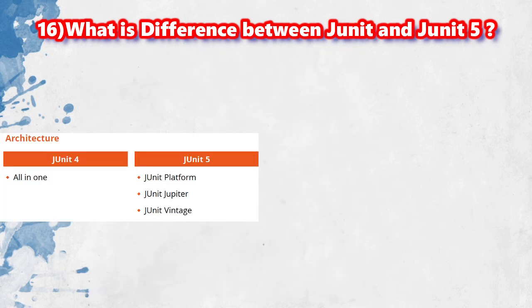In other words, there are many differences between JUnit 5 and JUnit 4 from an architectural point of view. In JUnit 4, everything is bundled into a single JAR file. But JUnit 5 is composed into 3 sub-projects: JUnit Platform, JUnit Jupiter, and JUnit Vintage.